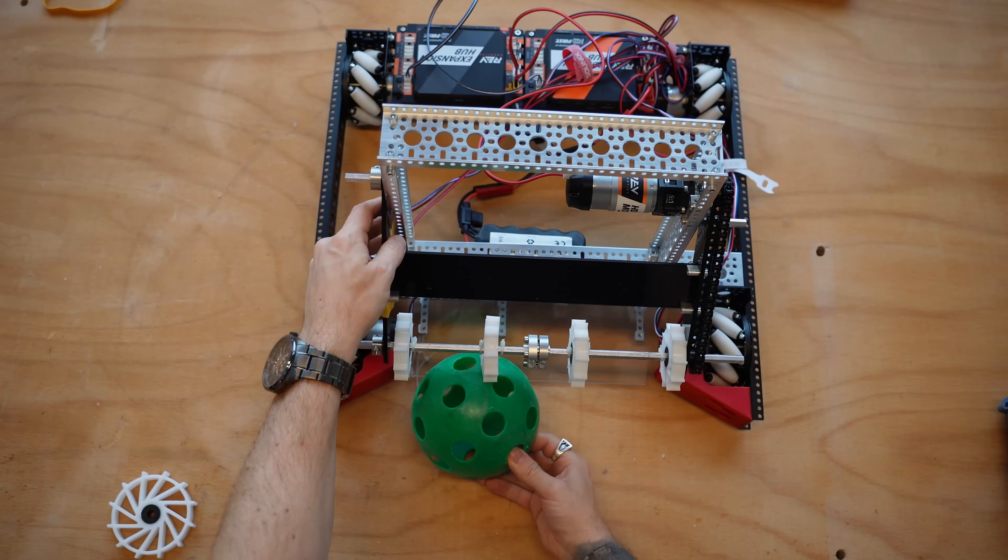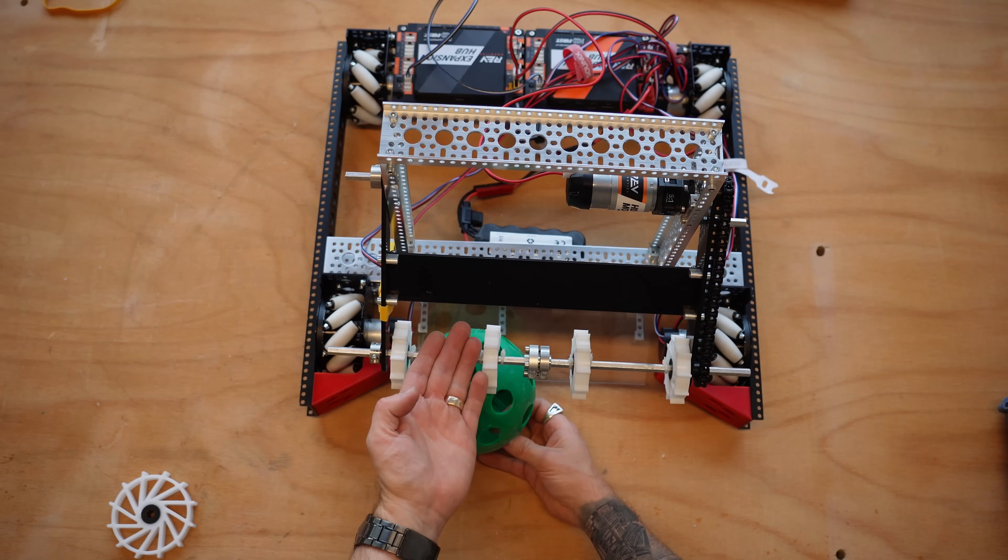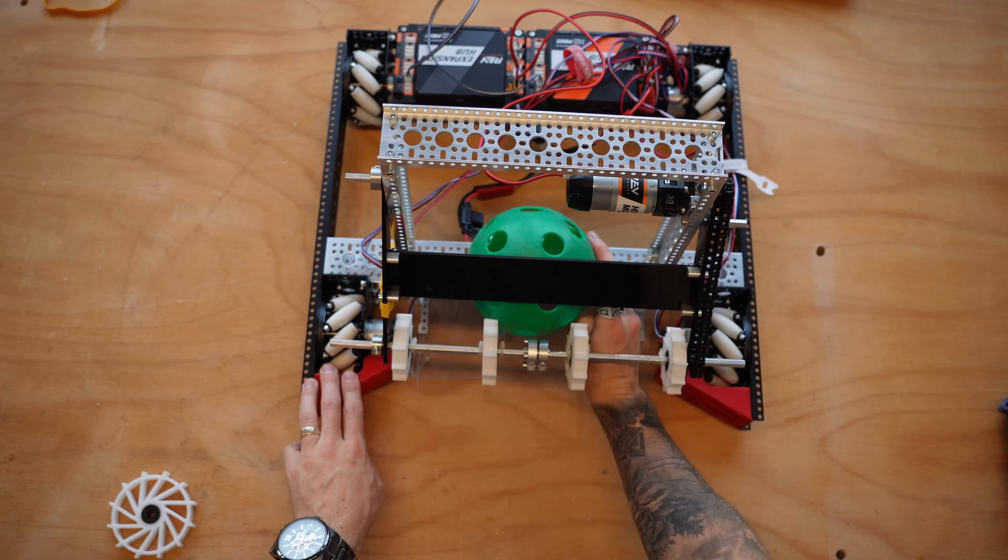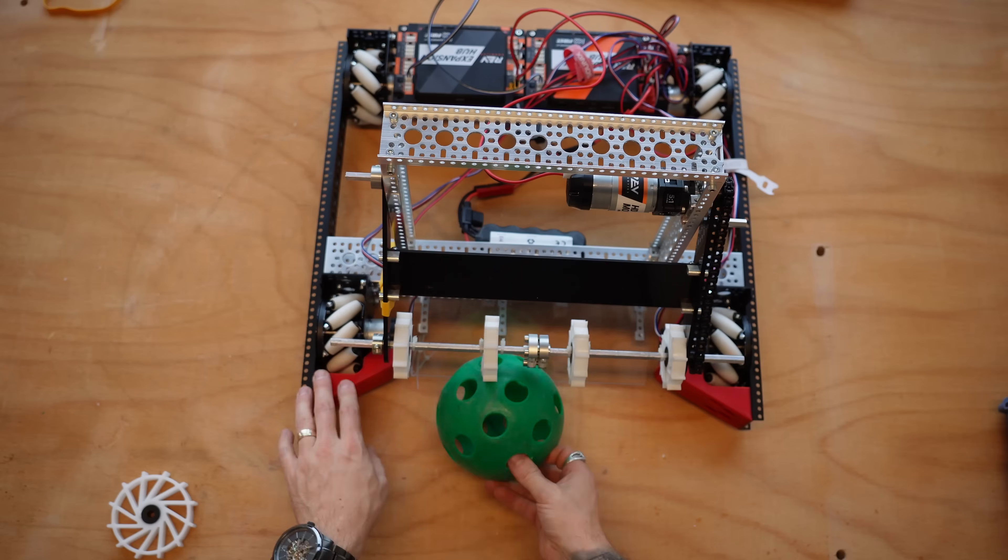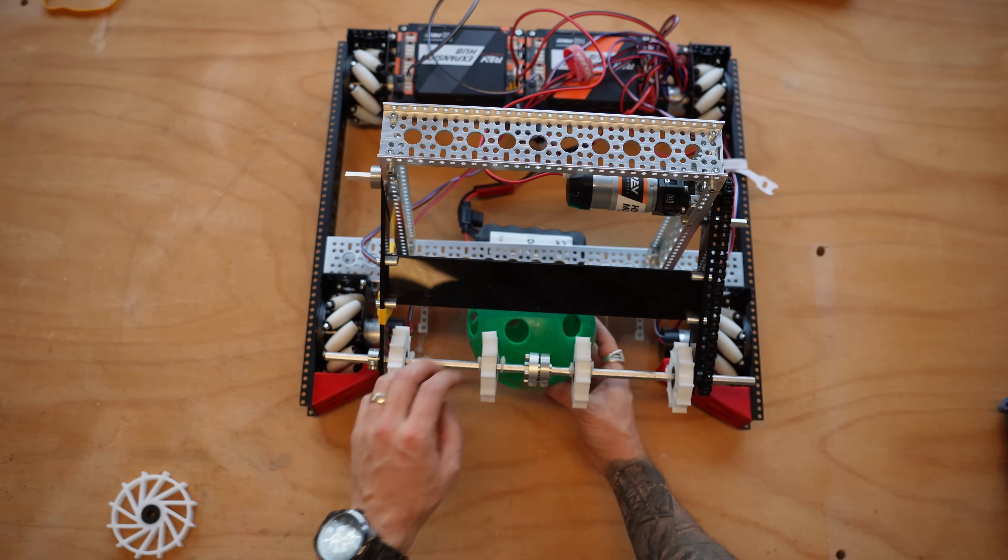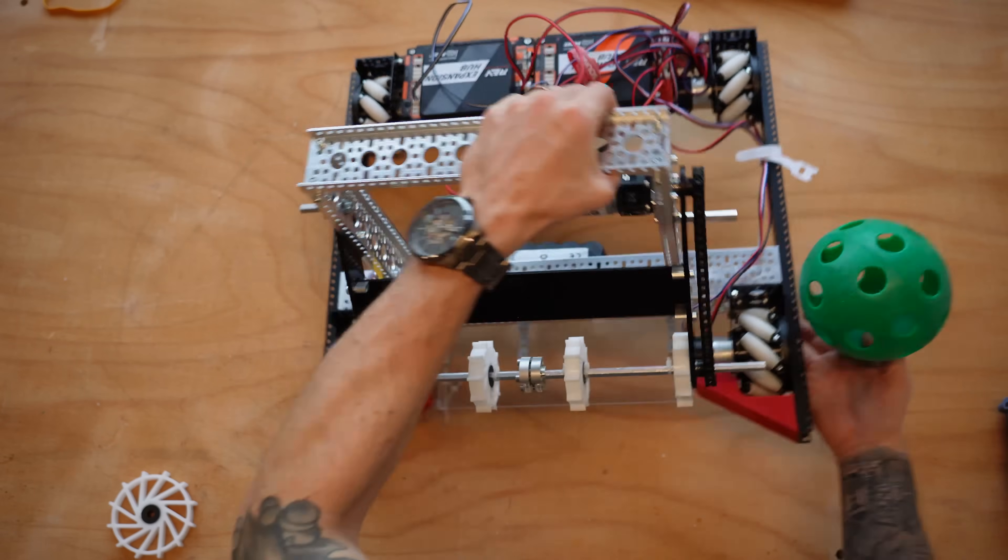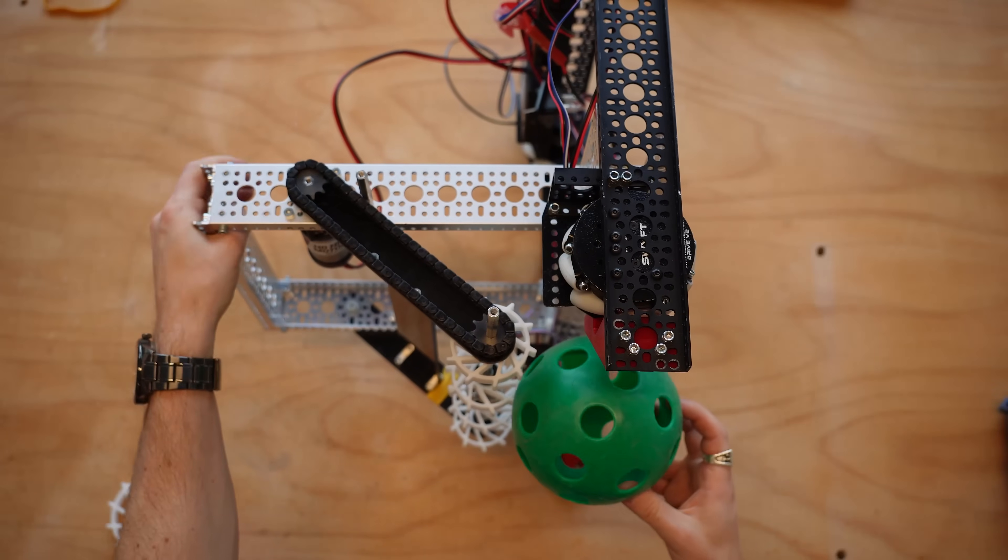And what ends up happening is as I come and push in, you'll see that not only is the wheel itself squishing, but the entire bar wants to lift up as that ball comes in. And having that bar lift up is really helpful, because depending on what the angle of your ramp is, this bar is able to automatically adjust to where that angle of the ramp is. And let's see if we can get a little bit of a closer view on that.